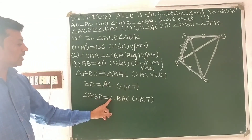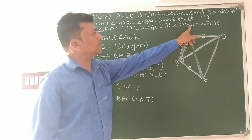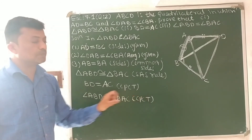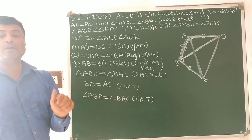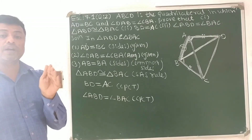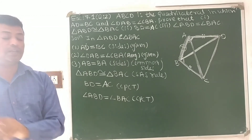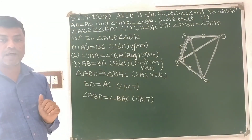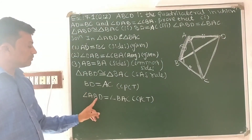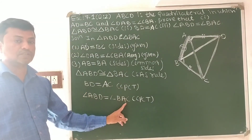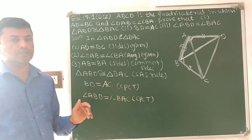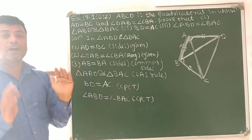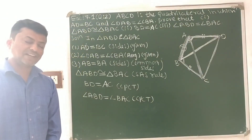Third, angle ABD is equal to angle BAC. They are also equal according to CPCT — congruent triangles' corresponding parts are equal. Angle ABD and angle BAC are the corresponding parts of the given triangles, so they are equal. Angle ABD is equal to angle BAC. This is the explanation of exercise 7.1, question number 2. I hope you can understand this. Thank you.